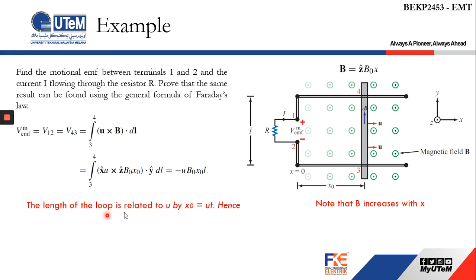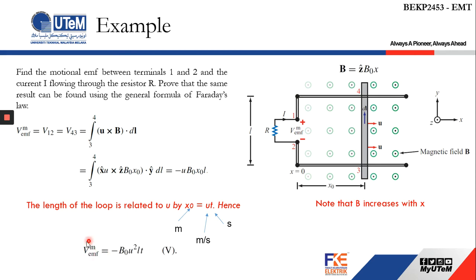The distance x_naught is related to speed by x_naught equals ut, where x_naught is in meters, u is in meters per second, and t is in seconds. Substituting ut into the equation, the motional EMF equals negative B0 u² lt.